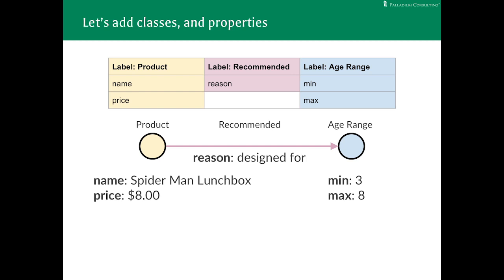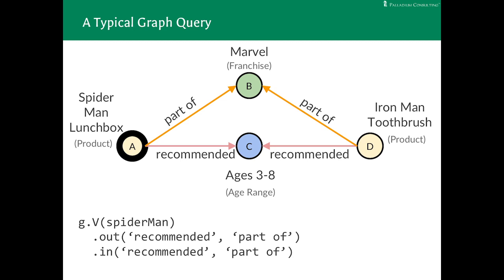So now we have the tools in front of us to answer one of the most typical of graph queries, the recommendation. So let's say you're rendering a web page for the Spider-Man lunchbox and you want one of those, you should also look at these products sections. With the graph query shown at the bottom here, we can say that starting at the Spider-Man lunchbox node on the left, we should follow edges out that are labeled recommended or part of, and then from there follow similar edges in the opposite direction, landing us at a new product, Iron Man toothbrush. We'll figure out it should be recommended because it's from the same franchise and recommended for the same age group.